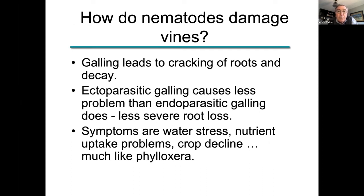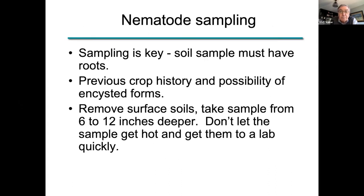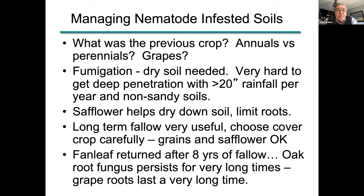We have endo-parasitic and ecto-parasitic nematode types. The symptoms of vine decline or water stress — just like phylloxera, the first symptoms are water stress. As you see the vine weakening and not taking up enough water under crop and heat load, nutrient uptake is also commonly impacted. Things like potassium can be one of the first signals that you have a fairly large infestation of nematodes and/or phylloxera. Sampling is key, and if you're going to sample for nematodes, you need roots — you must have roots as part of the sample. They're not random samples but targeted samples. Remove the upper six inches of soil surface and take the next six to twelve inches, getting it to a lab quickly and not letting the nematodes get hot — they can cook easily in the sun in a Ziploc bag.